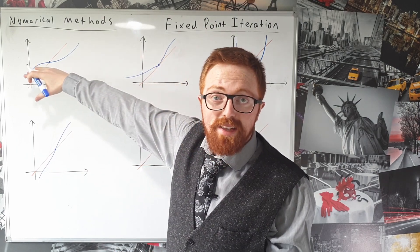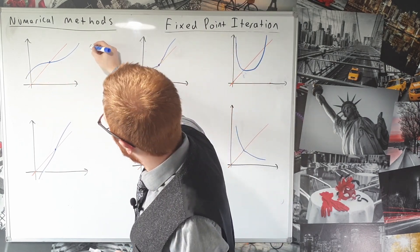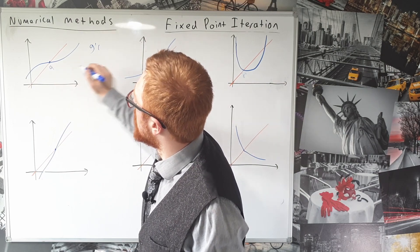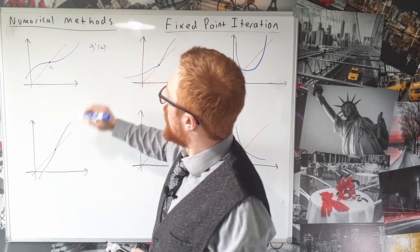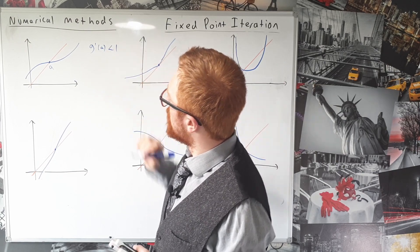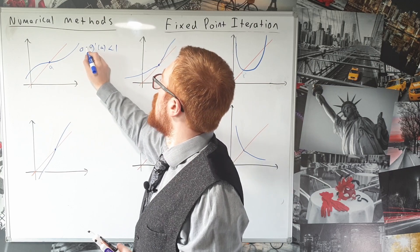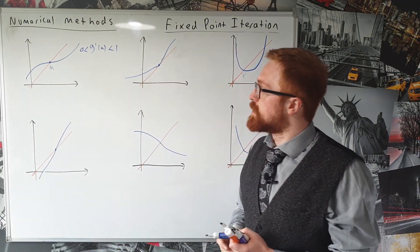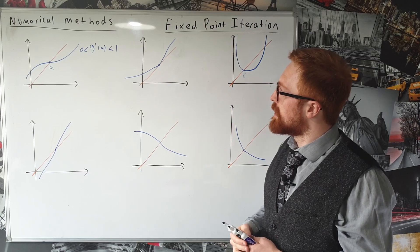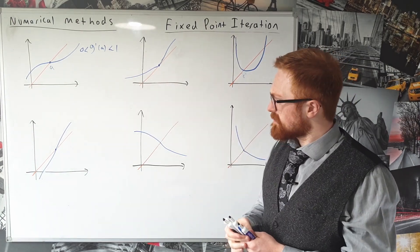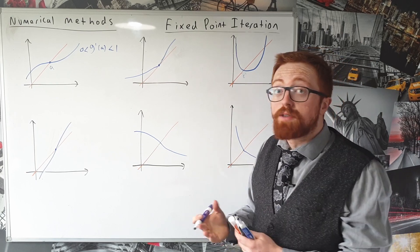or the gradient of that at the point we're after, g dash of, let's call that point a in each case, is less than 1. But it's also positive, it's an increasing function, so our gradient there is between 0 and 1. And that's the first thing really you need to notice, and that's what's going to determine how well it converges to this point in most cases.